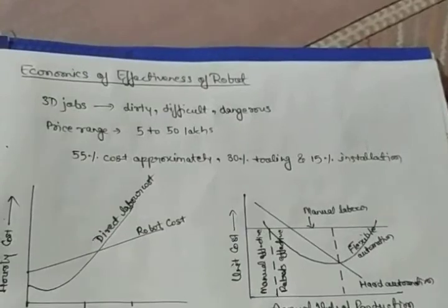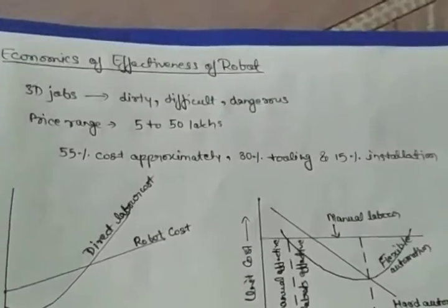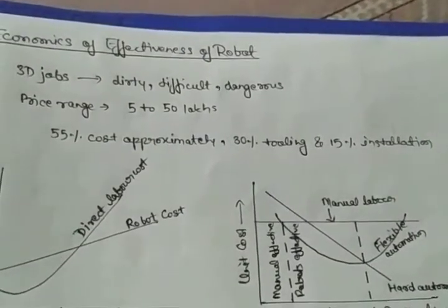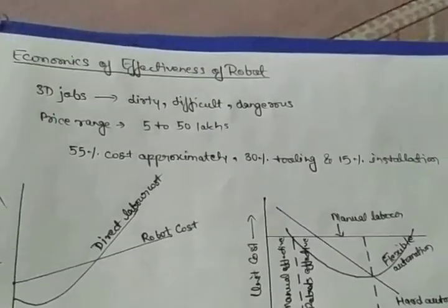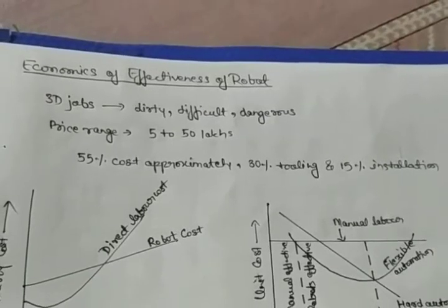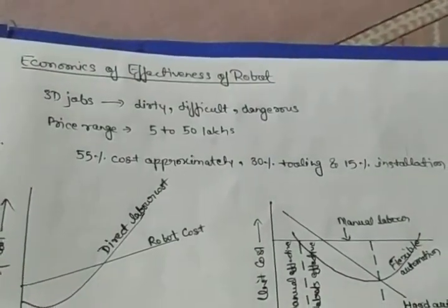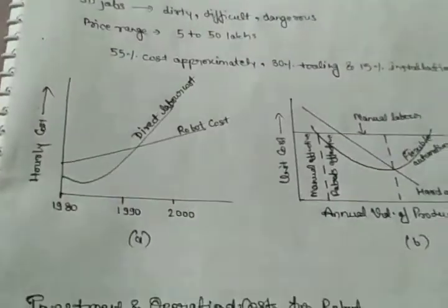This must be at the cost of associated tooling. 55% cost approximately, 30% tooling, and 15% installation. That means overall economically of robot is consumed effectiveness, that's why they're using in market.